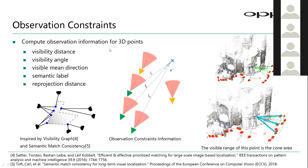The third part is called Observation Constraints, inspired by the visibility graph and semantic match consistency papers. In this part, we use 2D-to-3D matches instead of 2D-to-2D matches. We apply constraints to filter unwanted 3D points during matching and localization. The first is the visibility distance, which filters points far from the initial pose. We also use the visibility angle and visible mean direction: during mapping, 3D points and cameras form a cone area, and we filter points lying outside the cone using these two parameters.